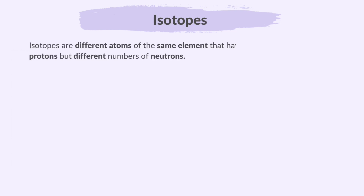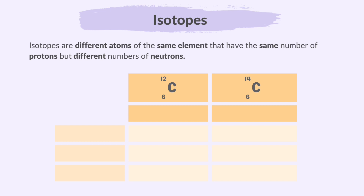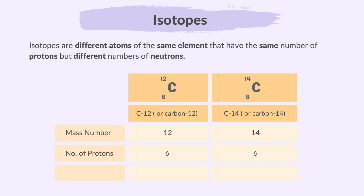Next, isotopes. Isotopes are different atoms of the same element that have the same number of protons, but a different number of neutrons. So isotopes have the same atomic number, since they have the same number of protons, but different mass numbers due to the different number of neutrons. Let's look at an example of two carbon isotopes. C represents the element carbon. This is carbon-12 and this is carbon-14. 12 and 14 are the mass numbers indicating the sum of protons and neutrons in the nucleus. Both isotopes have six protons, but carbon-12 has six neutrons and carbon-14 has eight neutrons.